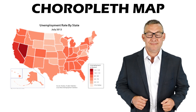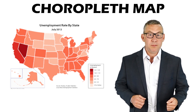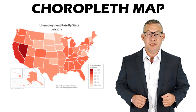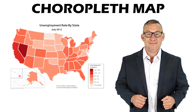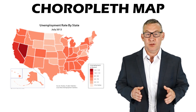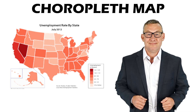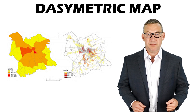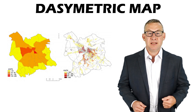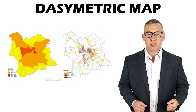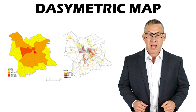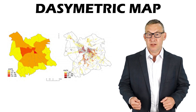A choropleth map is a thematic map that uses shading, colors, or patterns to show quantitative data about geographical areas, where each color or pattern represents a range of values. A dasymetric map is a type of choropleth map where ancillary information is used to model the internal distribution of a phenomenon — essentially a choropleth map where areas have been subdivided using another layer.